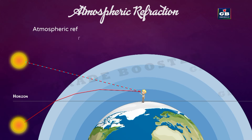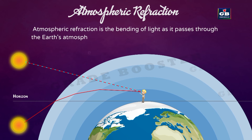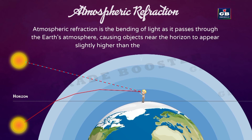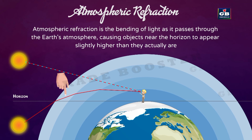Atmospheric refraction is the bending of light as it passes through the Earth's atmosphere, causing objects near the horizon to appear slightly higher than they actually are. When light enters from space into the atmosphere, it bends, making objects near the horizon appear slightly higher than their actual position.